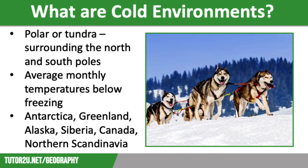We will start off by describing what we mean by cold environments. We can categorise cold environments into polar or tundra. The polar and tundra biomes are the regions surrounding the North and South Poles, with average monthly temperatures that are always below freezing. Cold environments cover one quarter of the Earth's land surface. They are found at high latitudes where cold, sinking air generates freezing winds and the sunlight is thin.